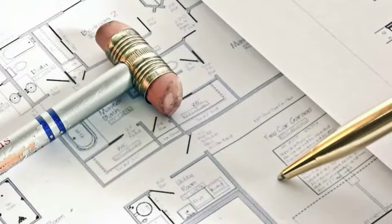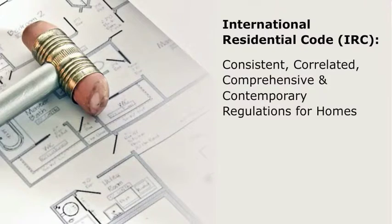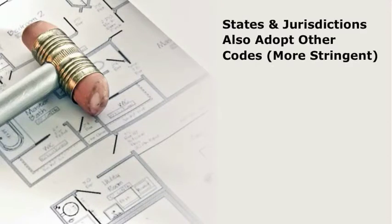A new Model International Building Code called the International Residential Code, commonly called IRC, has been developed to form a set of consistent, correlated, comprehensive, and contemporary building code regulations for homes throughout North America. However, the code must be adopted by state and/or local governments. Some states and jurisdictions also adopt other codes in addition to the IRC, or a more stringent version of a portion of the code. So becoming familiar with the state and local codes specific to your area is essential.